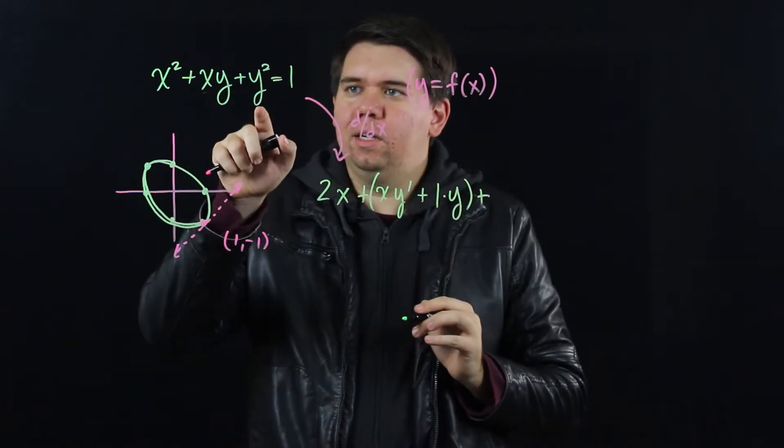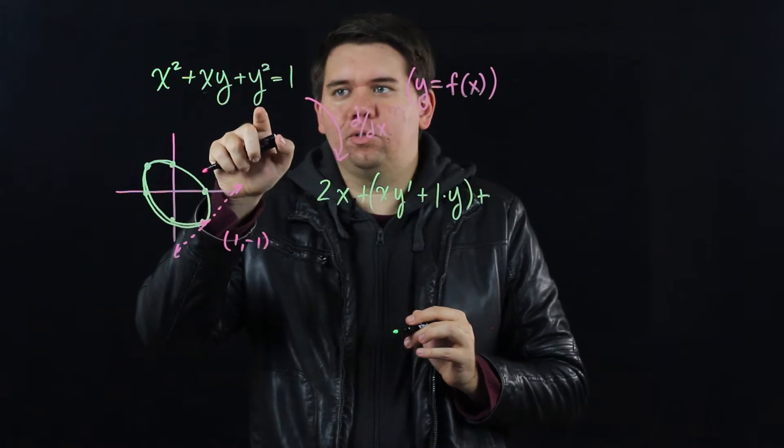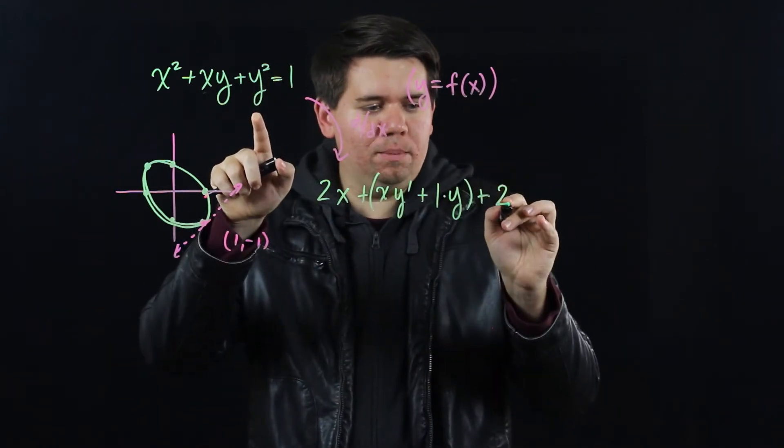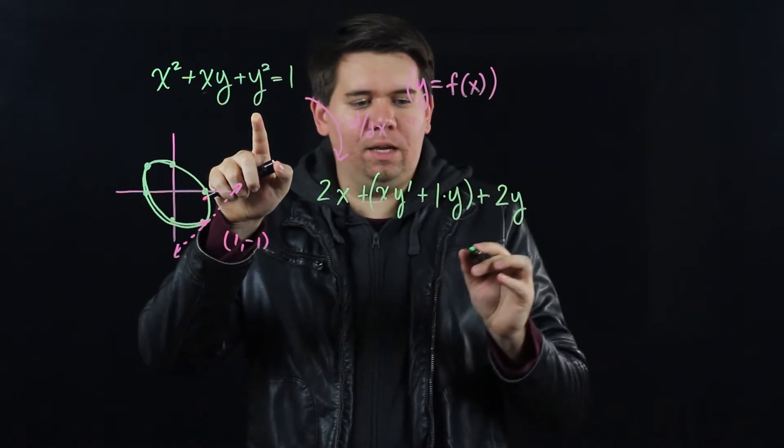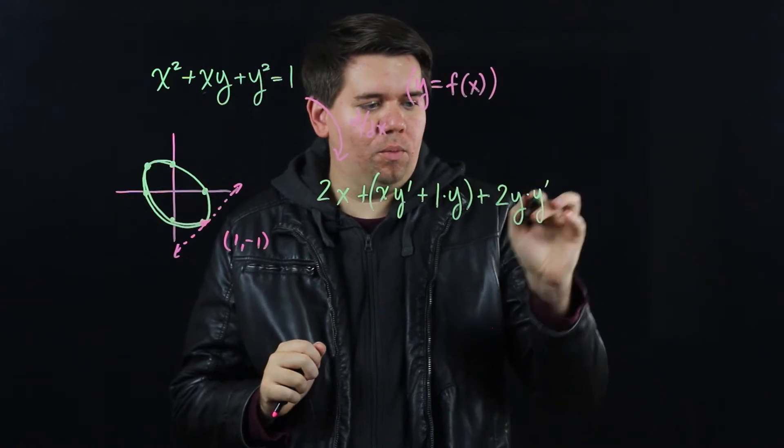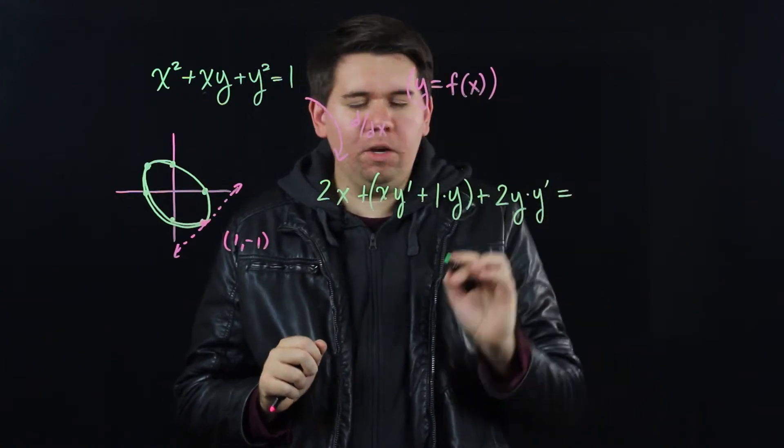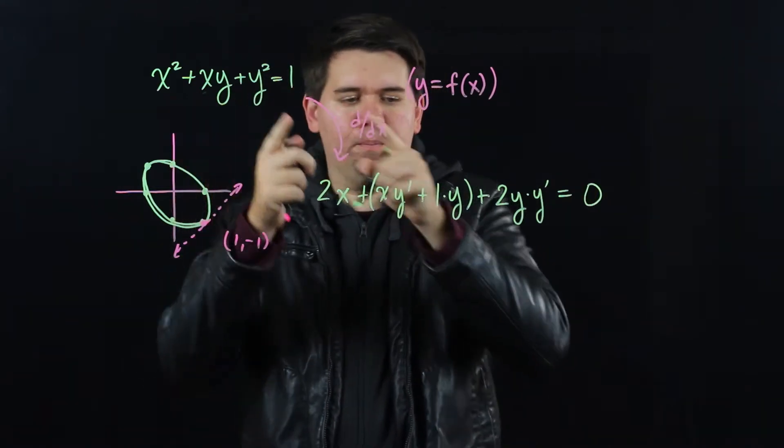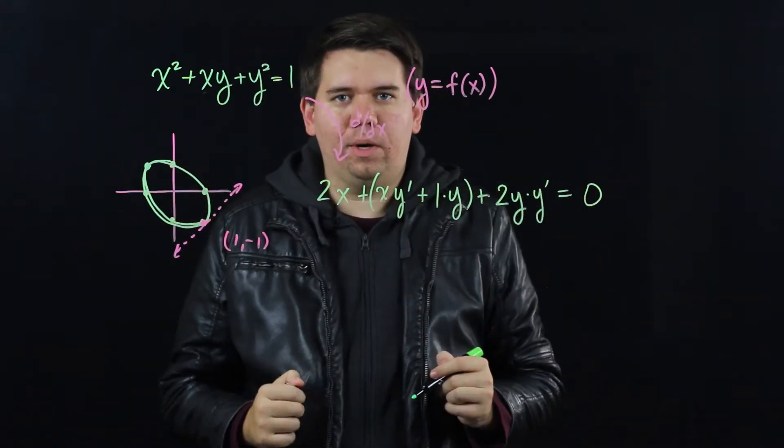Then plus the derivative of y squared. Since we're treating y as some function, it's just like some function squared. So the 2 comes down. The function stays the same. And you multiply it by the derivative of the function. The derivative of y, which is y prime. And that should be equal to the derivative of 1, which is 0. So we took the derivative of both sides of the equation.